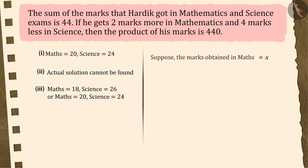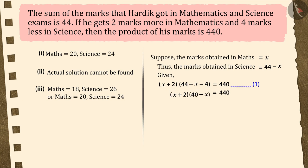Let us suppose that the marks obtained in mathematics is x. Therefore, the marks obtained in science will be 44 minus x. We know that if we add 2 to the mathematics marks and subtract 4 from the science marks, the product of the marks becomes 440, which is shown by equation 1. Upon further simplifying, we get algebraic equation 2.